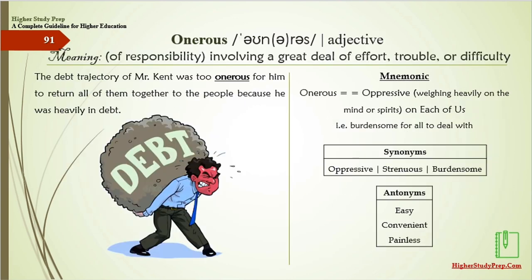Onerous denotes a condition involving a great deal of effort, travail, or difficulty. The debt trajectory of Mr. Kent was too onerous for him to return all of them together to the people, because he was heavily in debt. Mnemonic: onerous — oppressive on each of us, that is, burdensome for all to deal with. The synonyms are oppressive, strenuous, or burdensome. The antonyms are easy, convenient, or painless.